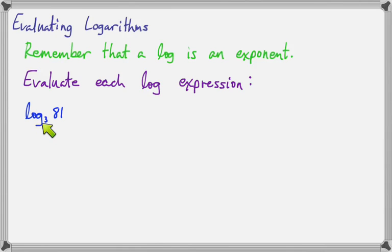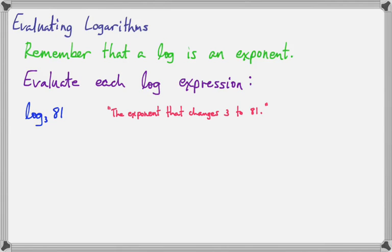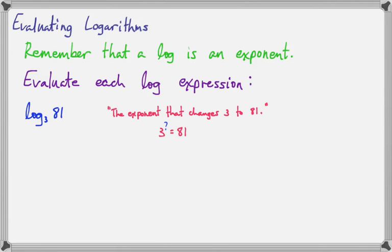Here is log base 3 of 81. Remember a log is an exponent, so you're going to say to yourself: what is the exponent that changes 3 into 81? Sometimes it helps to see it in exponent form so you know you're looking for that exponent. In that form, you'll realize it has to be 4. 3 to the fourth is 81. So log base 3 of 81 is 4. I switch it into exponential form and it helps me come up with the right exponent.